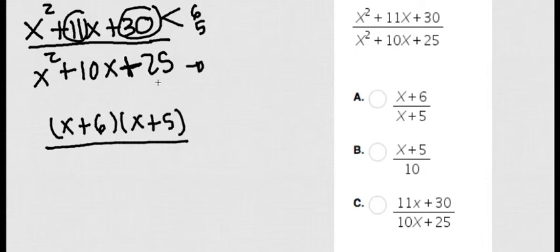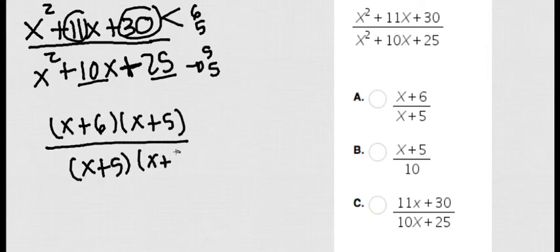Then on the bottom I need to find two numbers that when I multiply give me 25 and when I add them give me 10. Well the only numbers that I can think of is 5 and 5. So x plus 5, x plus 5.